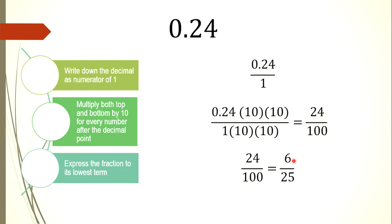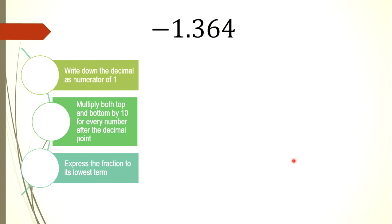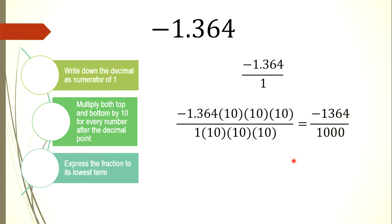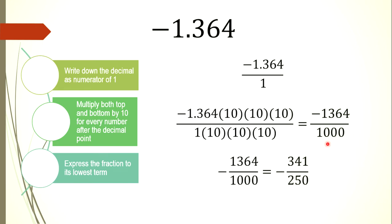Another example: negative 1.364. We make our decimal the numerator over 1, so it's −1.364/1. We have three numbers after the decimal point, so we multiply by 1,000 (three zeros). That gives us −1,364 in the numerator, making it a whole number. The denominator is 1 times 1,000, which is 1,000. Expressing that in lowest terms, the answer is −341/250.